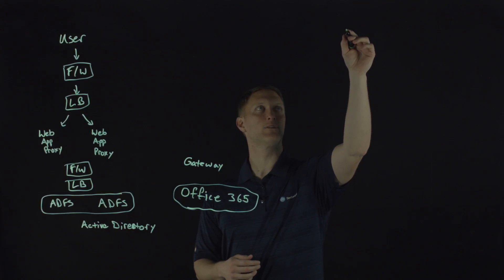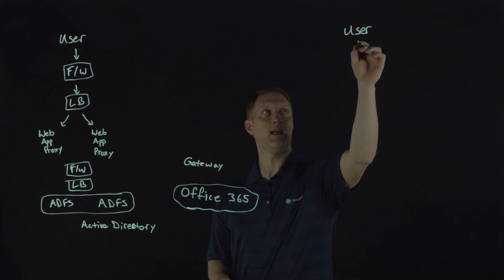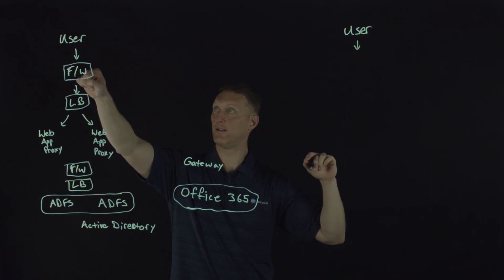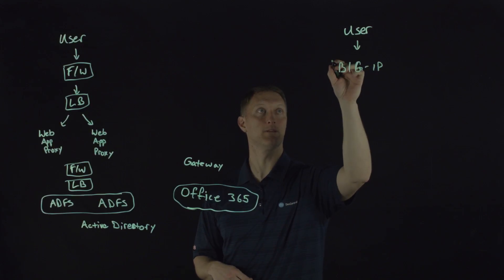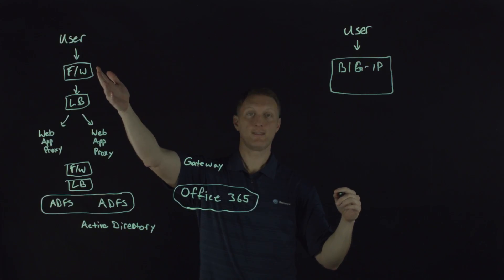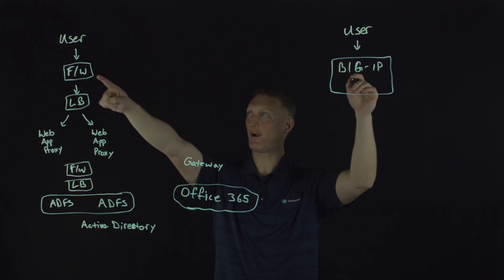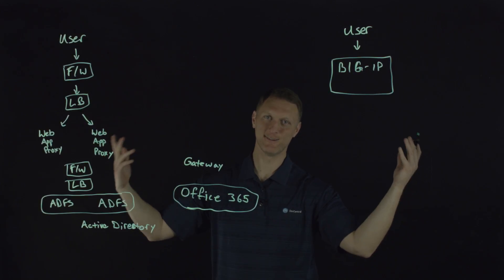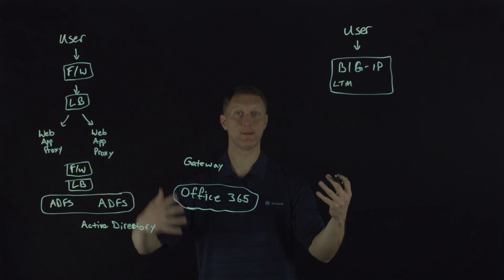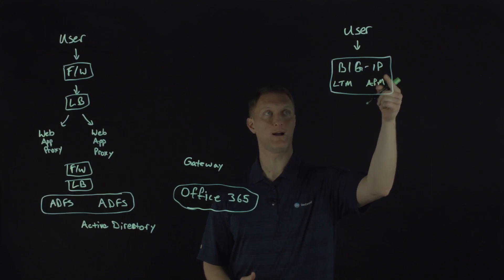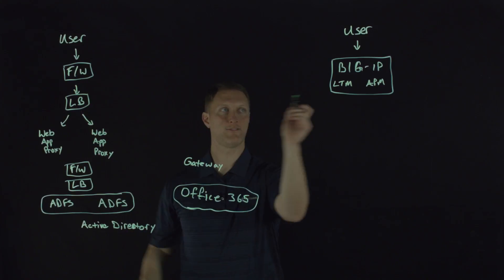You have that same user still trying to access that same Word document. He's going to come in and rather than having to put a firewall in place, you can put a Big IP. One thing the Big IP is known for and is certified as is a firewall, so you don't need a separate firewall here — you just need a Big IP load balancer. And guess what the Big IP can do? It can load balance, so you provision LTM on this thing. The web application proxy function the Big IP can do as well via the Access Policy Manager — the APM module that you can provision on the Big IP. So the firewall, the load balancer, and the web app proxies — you can combine all of that into one Big IP.